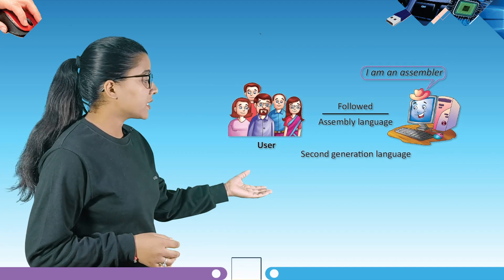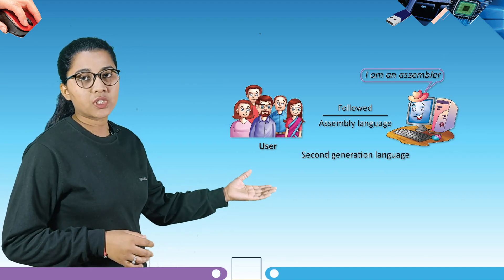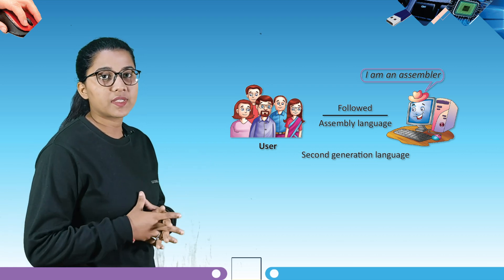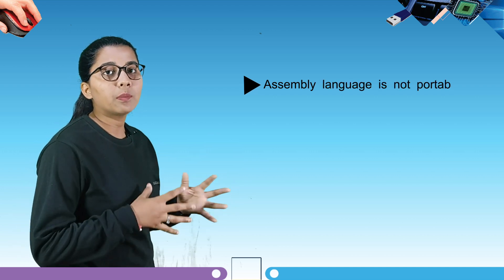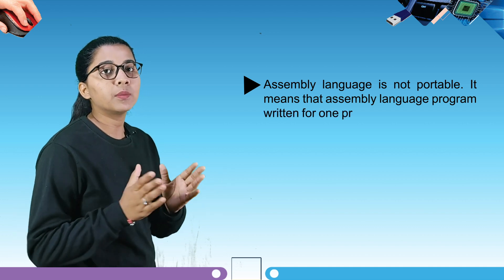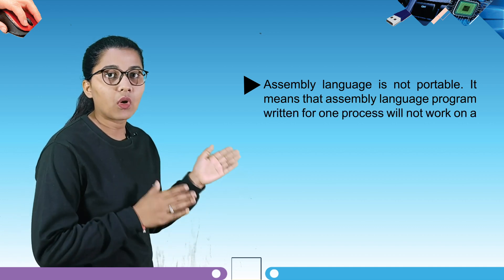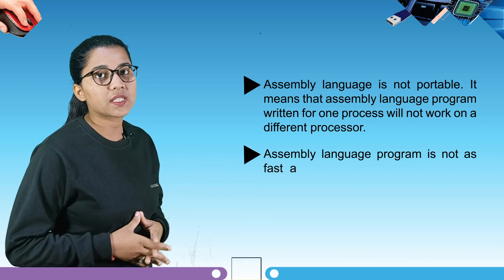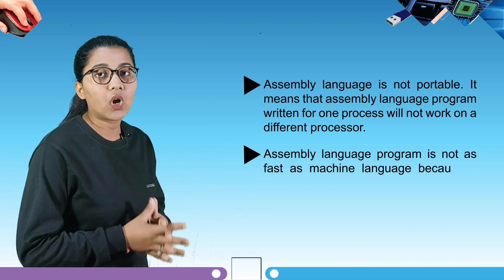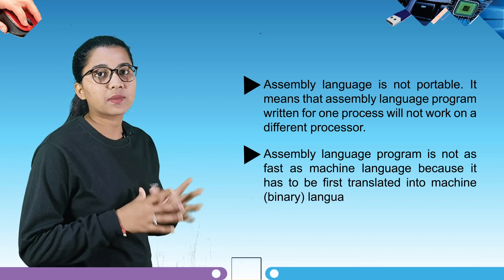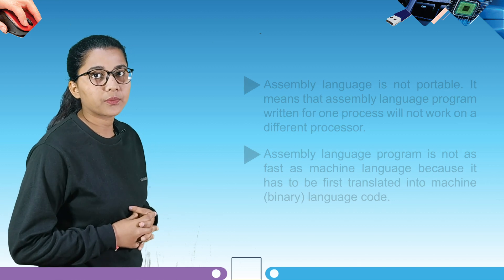Here you can see the picture of second generation computer language. Assembly language is not portable — a program written for one processor will not work on a different processor. Assembly language is also not as fast as machine language because it has to be first translated into binary machine language code.